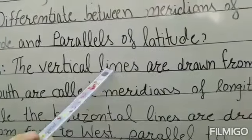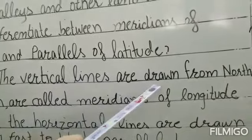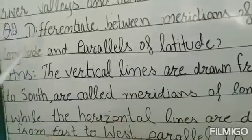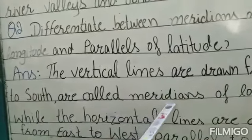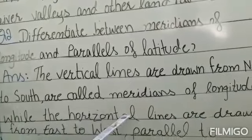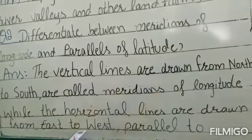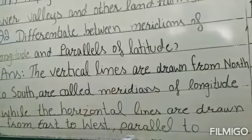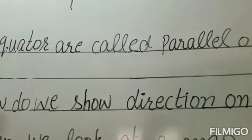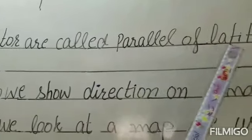The vertical lines drawn from north to south are made up of meridians of longitude, while the horizontal lines drawn from east to west are parallel to the equator and are called parallels of latitude.